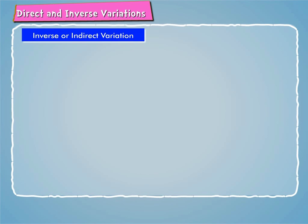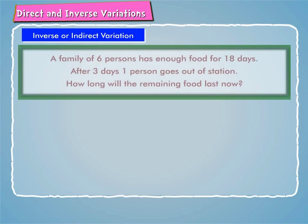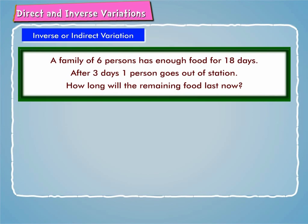Now, by using indirect variation rule, let us discuss an example. Suppose a family of 6 persons has enough food for 18 days. After 3 days, 1 person goes out of station. Let us find out how long will the remaining food last now.